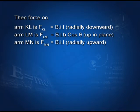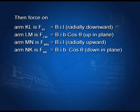The force on arm MN is F_MN equals BIL. Fleming's left-hand rule gives us the direction, which will be radially upward. The force on arm NK is F_NK equals BIb cosθ. Using the same rule, we obtain that the direction is downward in the plane of the paper.